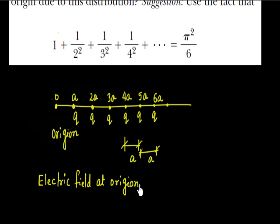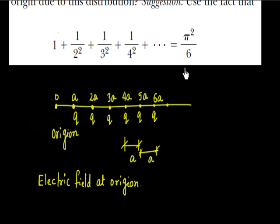One thing is given to you: there is a mathematical identity. You have 1 plus 1 over 2 squared plus 1 over 3 squared and so on. This identity is given to you — it can be derived — but for our purpose, this identity is given, and now things are very easy.